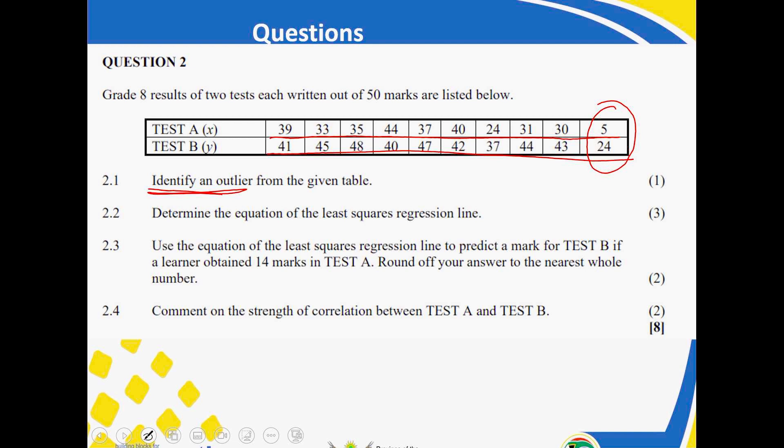Now, determine the equation of the least squares regression line. You get your A, your B, and your equation. This one, please take note. It is already there in your formula. So, you must know that. So, you need to know this. Use the equation. It says use the equation. So, even if your equation was wrong, the two marks here, you must get them. You can also get this answer from the calculator.